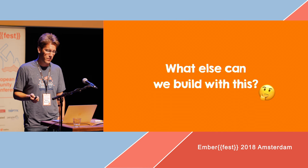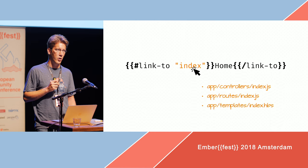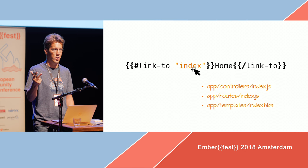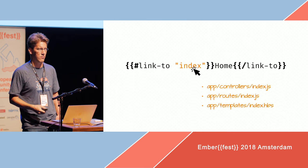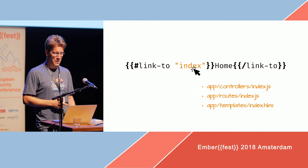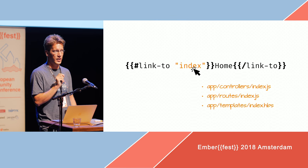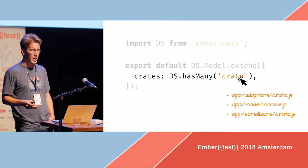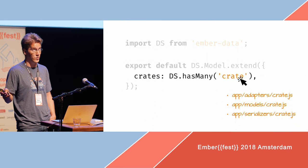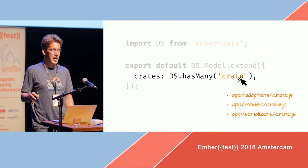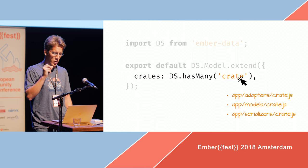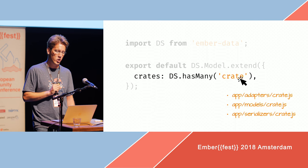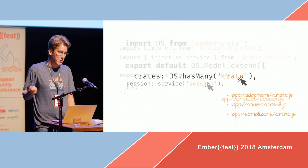So what else can we build with this? For example, link-to. We call the link-to component and pass it a route name. That route name defines a route, a controller, and a template. If we click on the route name, it could automatically take us to the index controller, index route, or index template. And this is not just limited to Handlebars — we can do the same thing for JavaScript, just with a different parser and a different AST. The concept is exactly the same: figure out what you've clicked on, figure out what files that could mean, and suggest it to the editor. Same is true for service injections, for example.